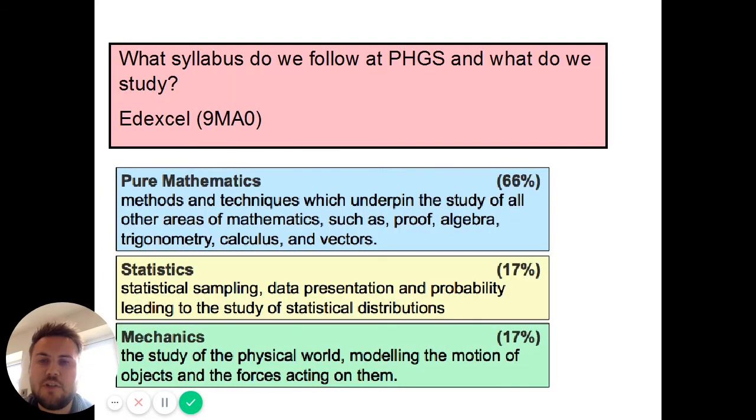I'm going to just go through a few important details. So we study Edexcel A Level Maths and the course code is 9MA0 and the course has three parts to it. It's two thirds pure maths which is things like algebra, trigonometry, calculus, vectors. A sixth is statistics that's like histograms, probability and a sixth is mechanics which is related to physics, it's to do with the motion of objects and forces acting on them.